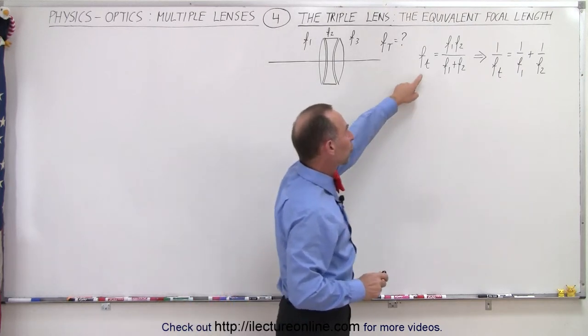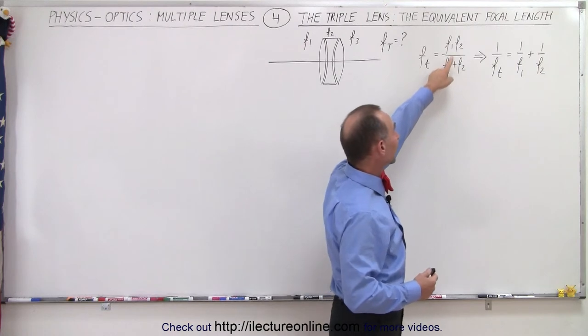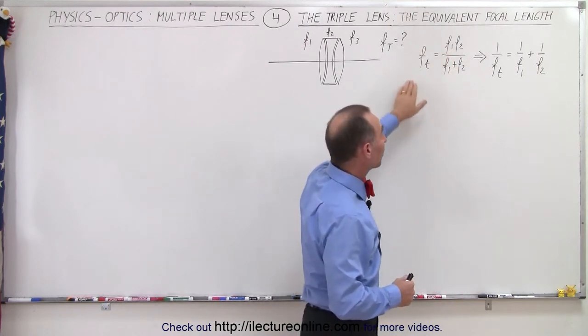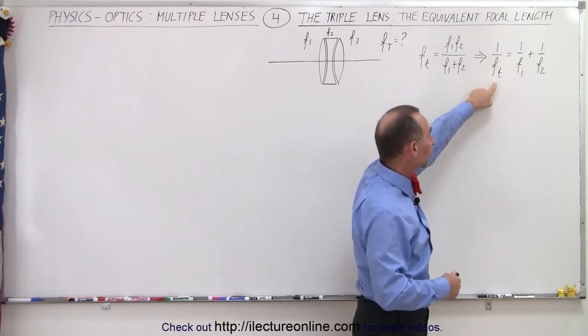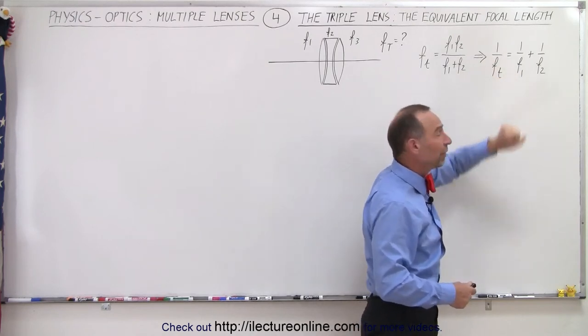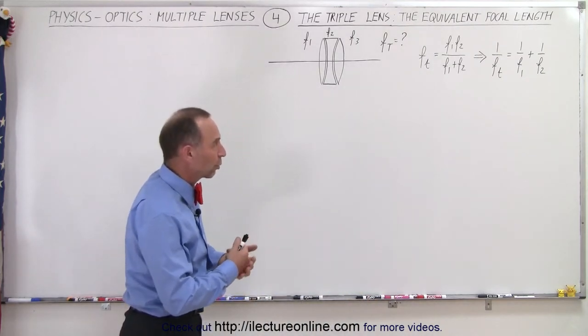We saw that the total or equivalent focal length for two lenses can be found by taking the product over the sum of the two lenses. This can also be written as one over the focal length, or the total focal length, is equal to one over f1 plus one over f2. It's the same equation, the equivalent equation.